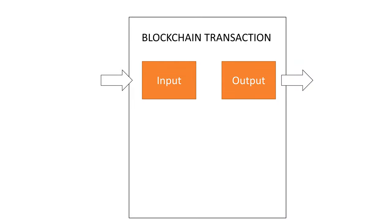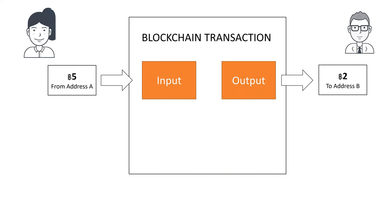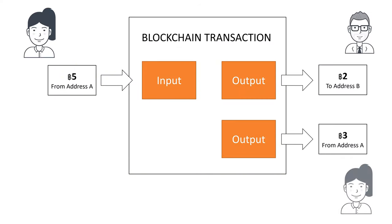Both elements can have multiple inputs and outputs. Say Alice has 5 coins and wants to spend 2 coins to Bob. She cannot subtract 2 coins from 5 because of the design of the system — she must spend all 5 coins as input. As output, she sends 2 units to Bob's address and 3 back to herself. She has an option to send it back to the same address or to a new address, and she can split the rest into many addresses as she wishes.